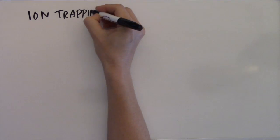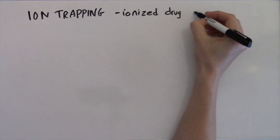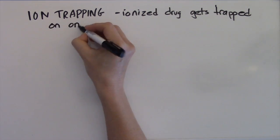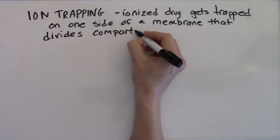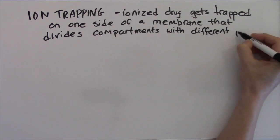Ion trapping, as it applies to pharmacology, occurs when a drug in its ionized state gets trapped on one side of a membrane that divides two compartments that contain fluids of different pH values.